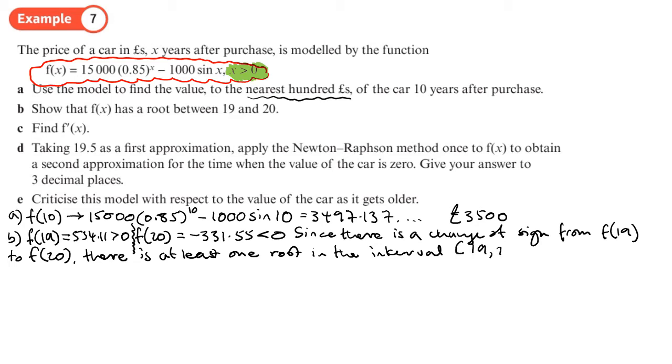Now what does that mean? Well, it means somewhere between the 19th and the 20th year, the value of the car goes down to zero. And I'm probably guessing that what we're going to be doing is working out exactly when during the 19th year the value goes below zero, so it looks like we're going to be using Newton-Raphson.